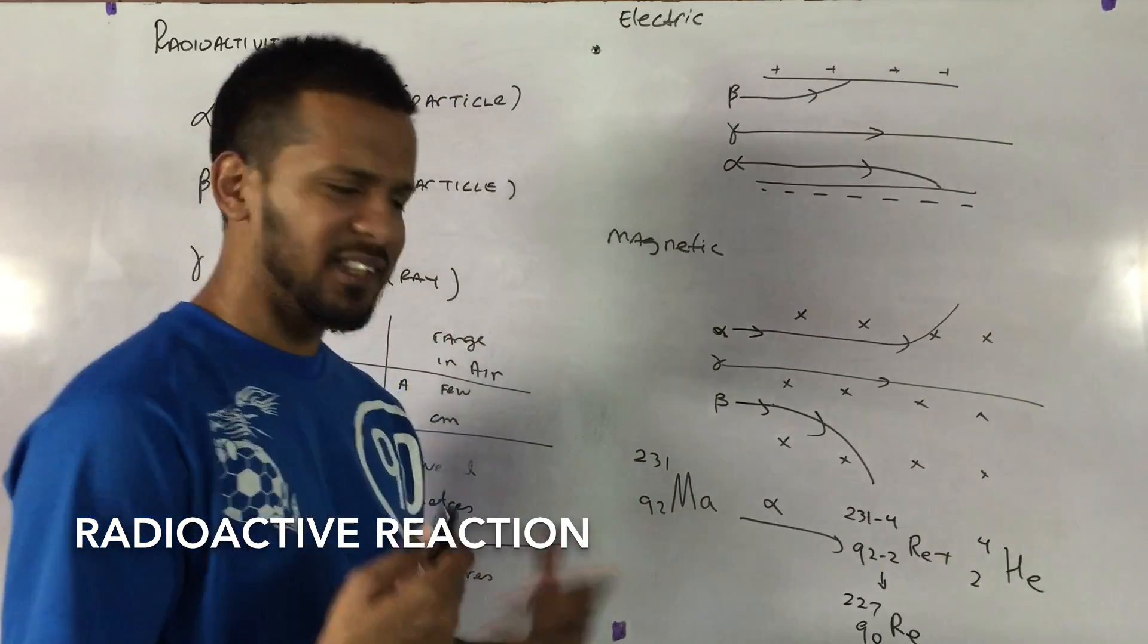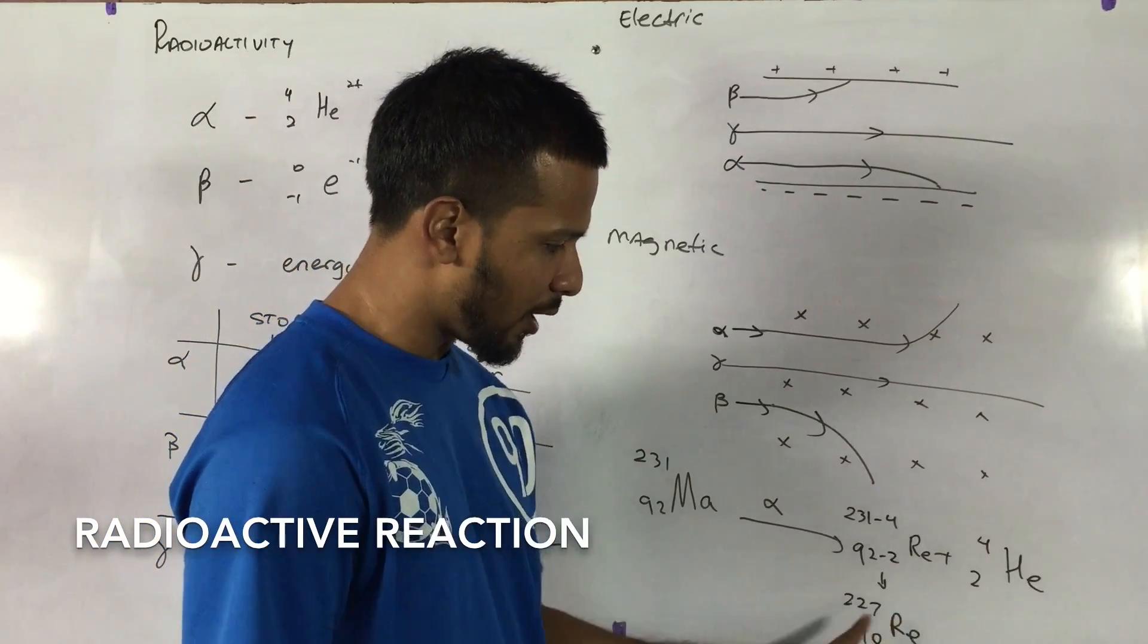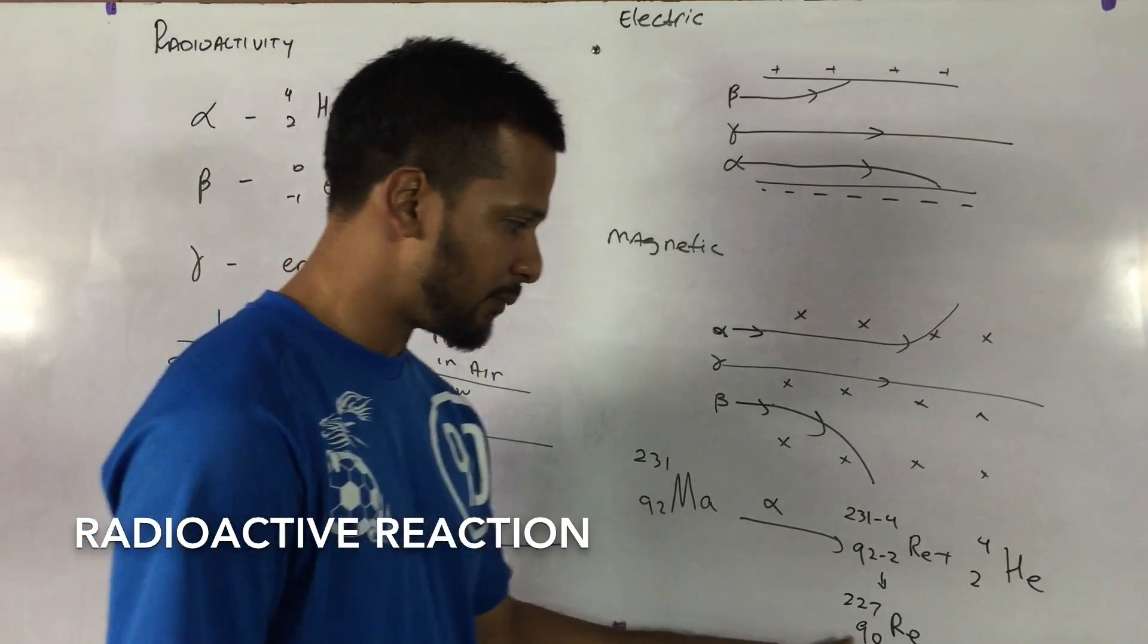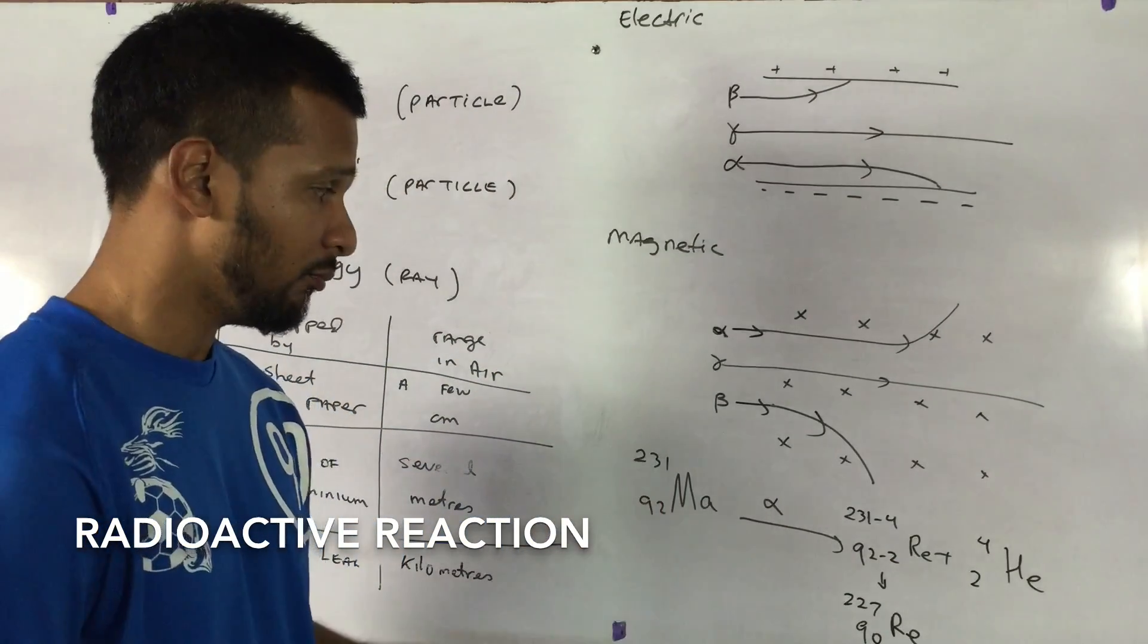So what does this mean? Basically, just balancing equations. If I add up the nuclear numbers, 227 plus 4, I must get this. And if I add up the atomic numbers, 90 plus 2, I must get this. Fair enough?